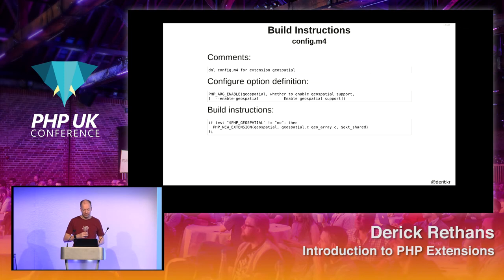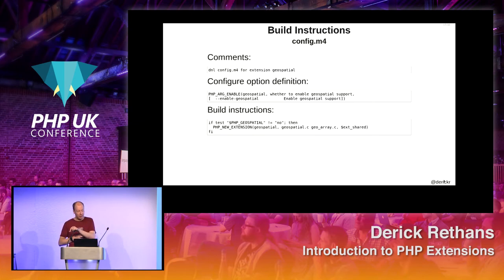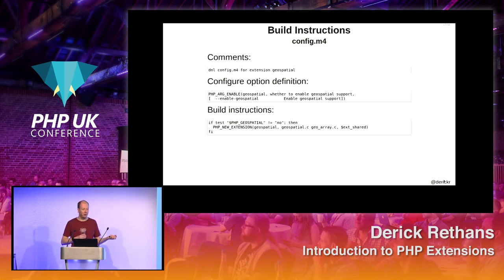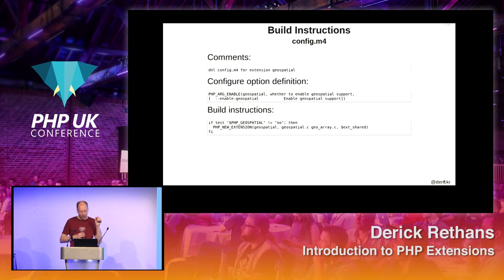After all your options and libraries have been checked, you need to tell PHP's build system to do a few things. The build instructions say, if we passed in the flag and it isn't no — because you can do enable-geospatial=no — you need to test for that. And then with the PHP_NEW_EXTENSION macro, you define the name of my extension is geospatial, I have the following C files that you need to compile. You have a comma, and then you have the $ext_shared, which you just need to do. The magic of M4.